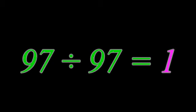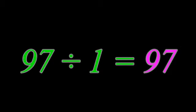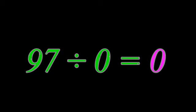97 divided by 97 equals 1. 97 divided by 1 equals 97. 97 divided by 0 equals 0.